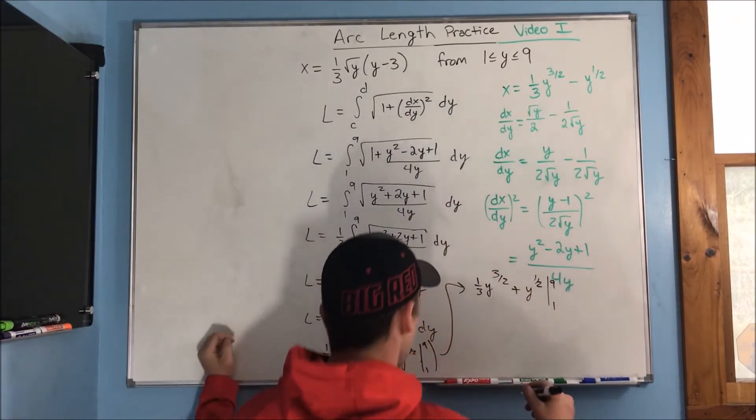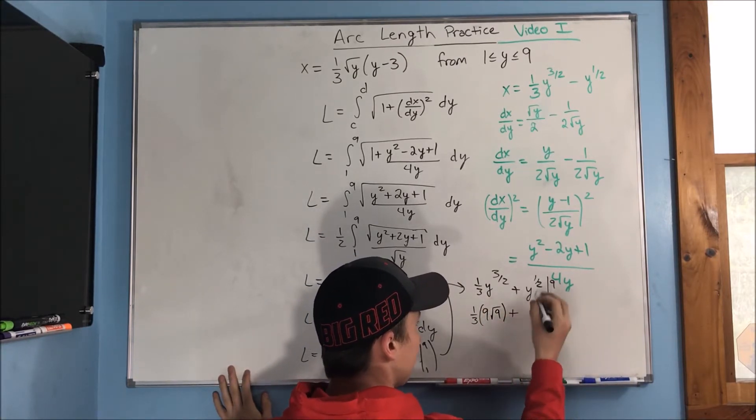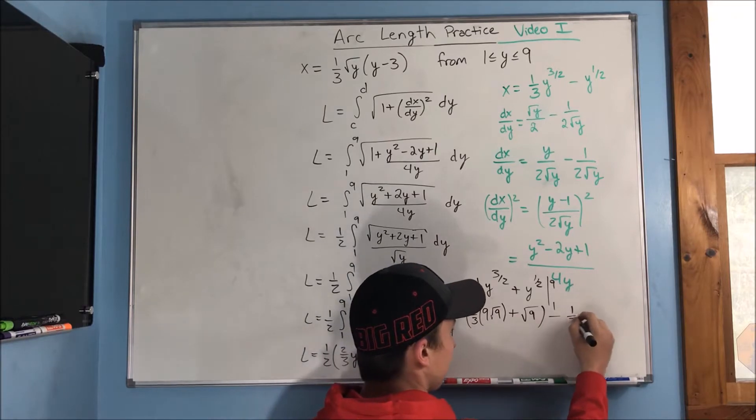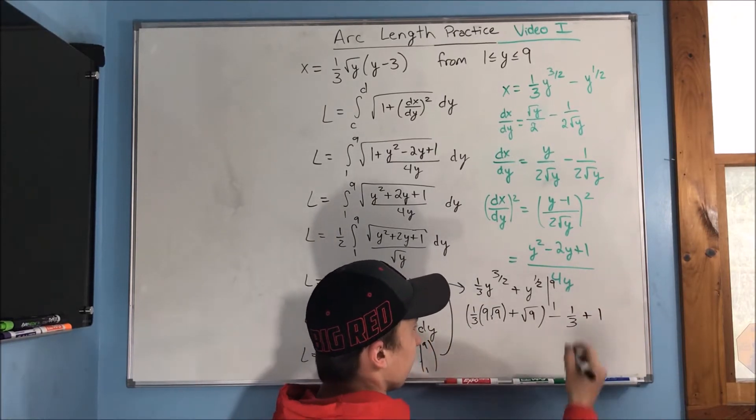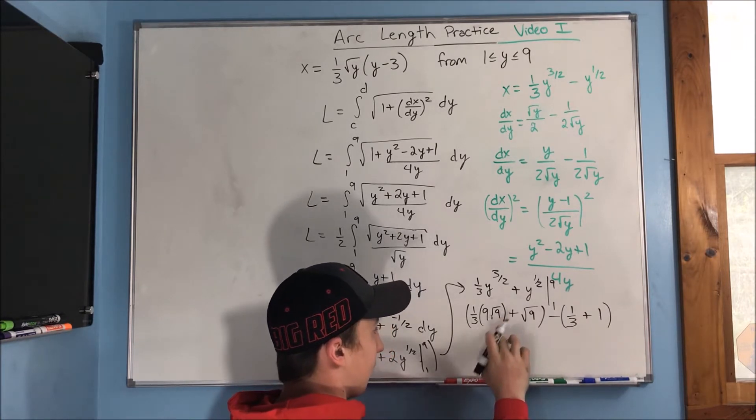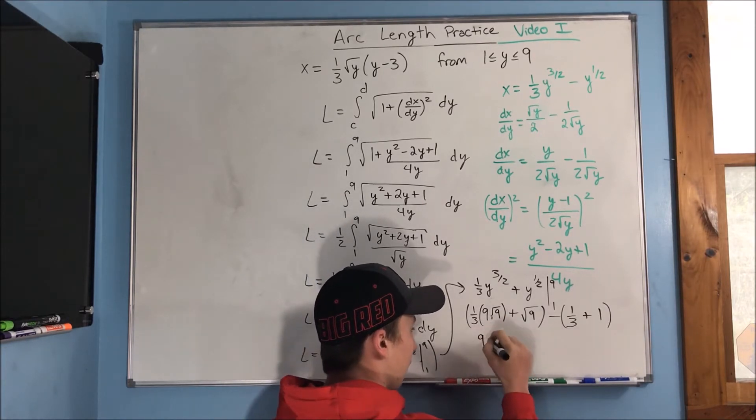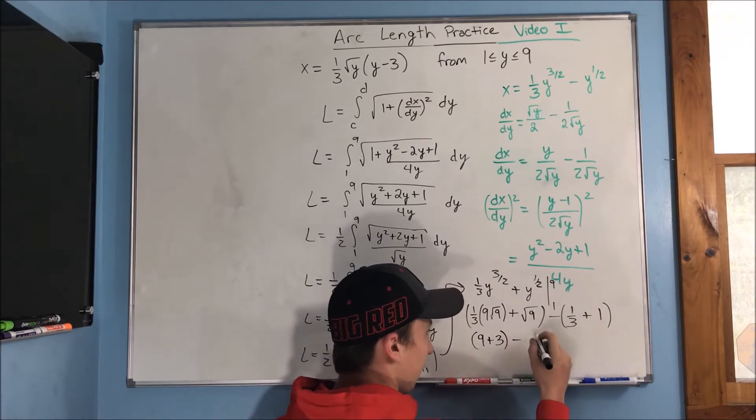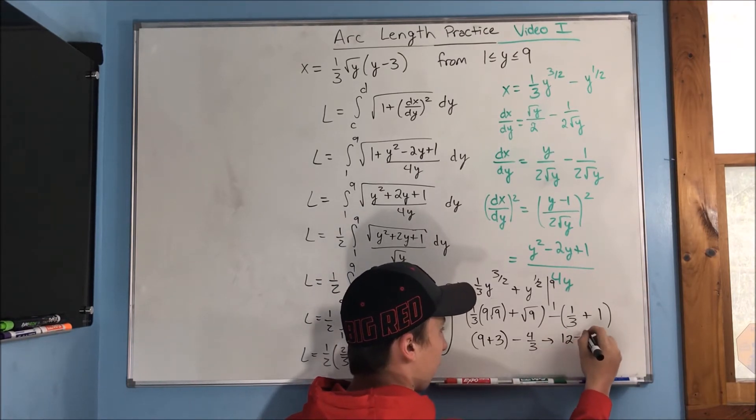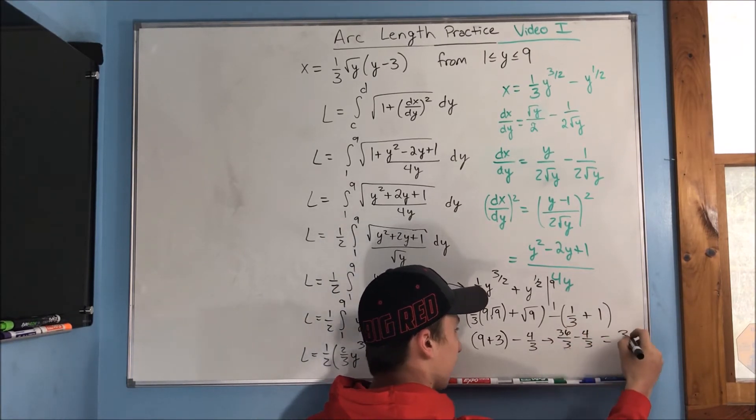Doing our evaluation, we're going to end up getting 1 third times 9 rad 9 plus this is just going to be a rad 9. And this is going to be minus our second term, which is going to be 1 third plus 1. You can probably do the simplifications from here, but I'm going to do it for you. This rad 9 becomes 3 and this rad 9 becomes 3. So, we end up getting this cancels out with this. So, we get 9 plus 3 minus it's going to be 4 thirds, and that ends up being 12 minus 4 thirds which is we can rewrite that 12 as 36 over 3 to get our final answer of 32 over 3.